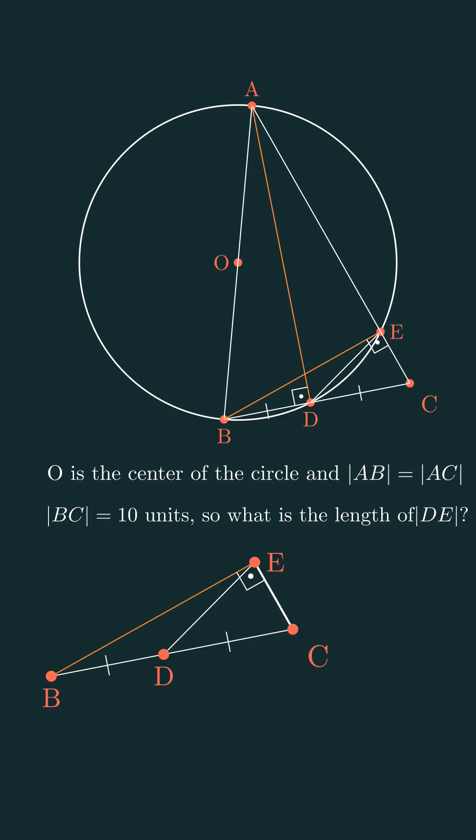This is a right triangle, and in a right triangle, if you draw a median to the hypotenuse, you create two isosceles triangles. So if BC equals 10 units, then the length of DE is 5 units.